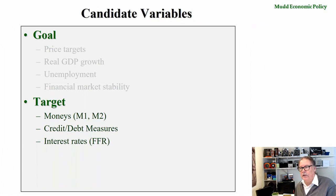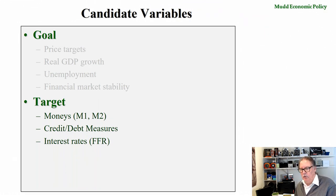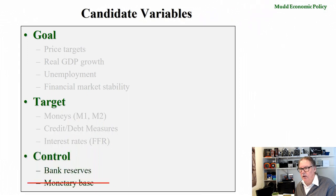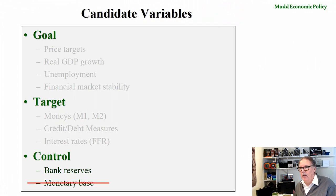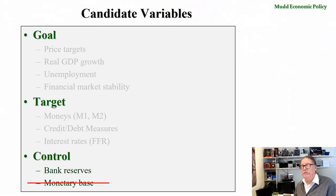They don't directly control the money supply — that may surprise you — and they don't directly control credit and debt measures. Instead, what they do control is the level of bank reserves, which will be explained in the lectures on open market operations. They used to also control a variable called the monetary base, but for the largest part now they're neglecting that statistic for various reasons. We'll talk about bank reserves only.